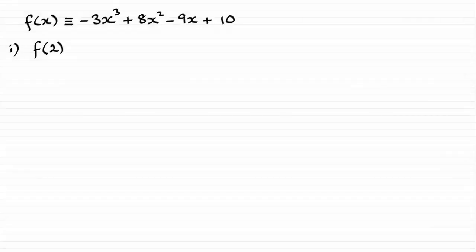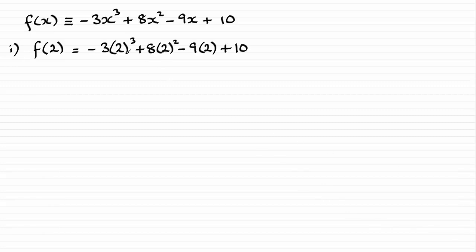For this question, we're given f of x and asked to first calculate f of 2, and then express f of x as a product of two algebraic factors. Finding f of 2 is dead easy — all we need to do is substitute x as 2. If you do that, you get this expression, and working out the value of each of the terms comes out to be zero.